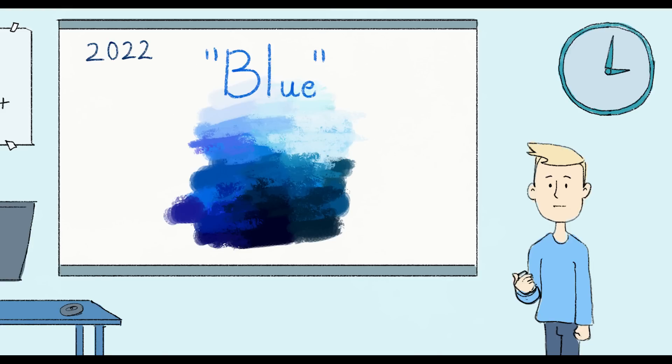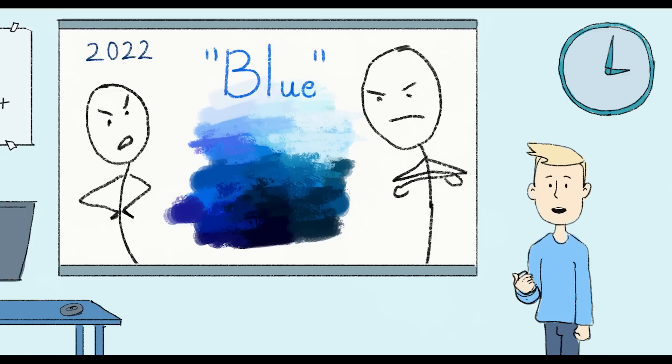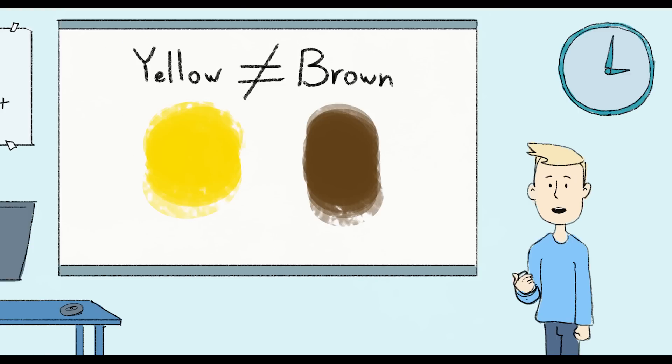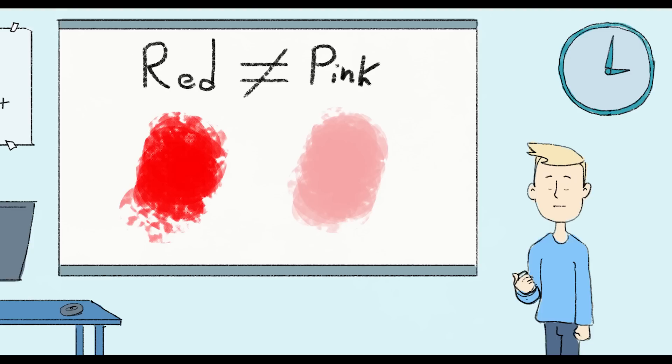A hundred years ago, blue was a lot of colors. Which was very unfair. A hundred years ago, people would have said dark yellow is not yellow, but brown. Light red is not red, but pink.